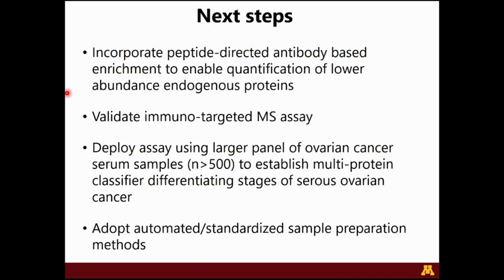Next steps: we have our validated assay, but we'd like to be able to quantify additional proteins at lower abundance. To do that, we can adopt a peptide-directed antibody-based enrichment method to quantify low-abundance endogenous proteins, and this immuno-targeted mass spec assay will need to be validated. We'd like to deploy the assay using a larger panel of ovarian cancer serum samples — obtained through a collaboration with Amy Skubitz — to establish a multi-protein classifier to differentiate stages of serous ovarian cancer. We'd also like to continue evaluating standardized and automated sample preparation methods.